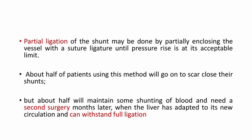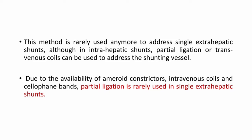Partial ligation of the shunt may be done by partially enclosing the vessel with a suture ligature until the pressure rises to its acceptable limit. About half of the patients using this method will go on to scar-close their shunts, but about half will maintain some shunting of blood and need a second surgery a month later. This method is rarely used anymore to address single extrahepatic shunts, although in intrahepatic shunts, partial ligation or transvenous coils can be used. Due to the availability of ameriod constrictors, intravenous coils, and cellophane bands, partial ligation is rarely used in single extrahepatic shunts.